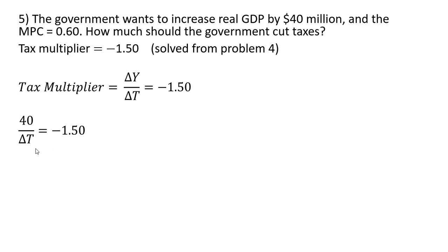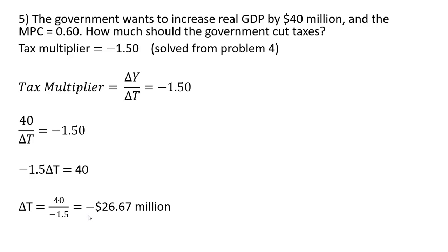Now we solve for the change in taxes by multiplying through by the change in T. Minus 1.5 times the change in T equals 40. Dividing both sides through by minus 1.5, the change in taxes has a minus sign — we have to cut taxes by almost $27 million to achieve an increase in GDP of $40 million, given our MPC of 0.6.